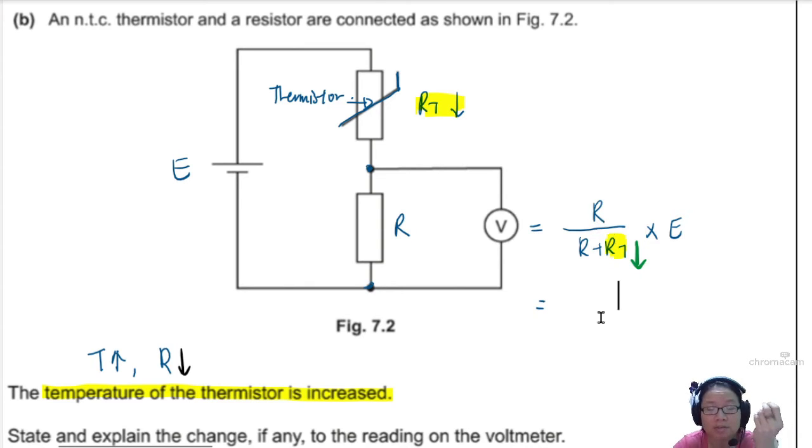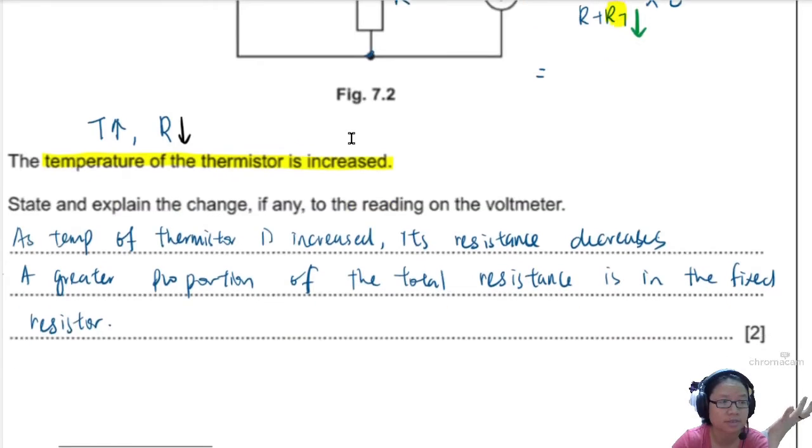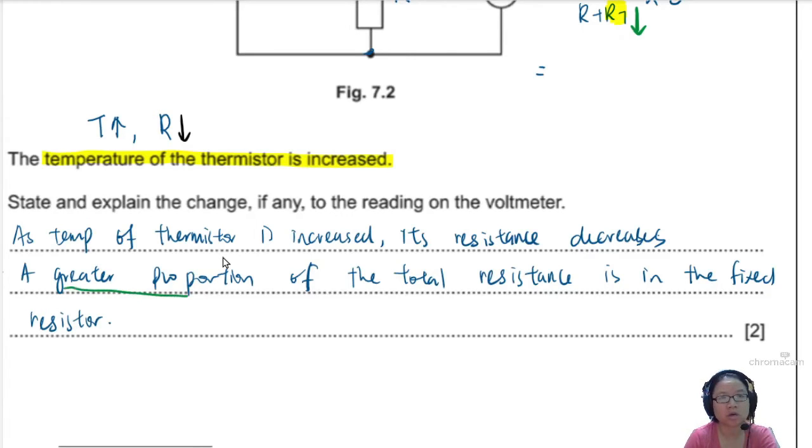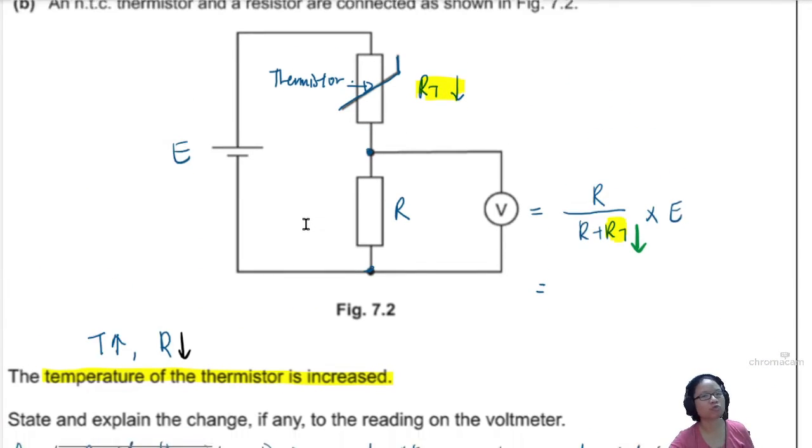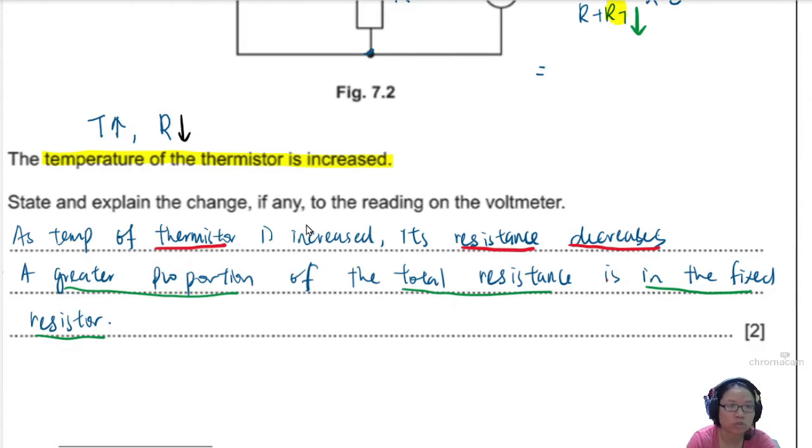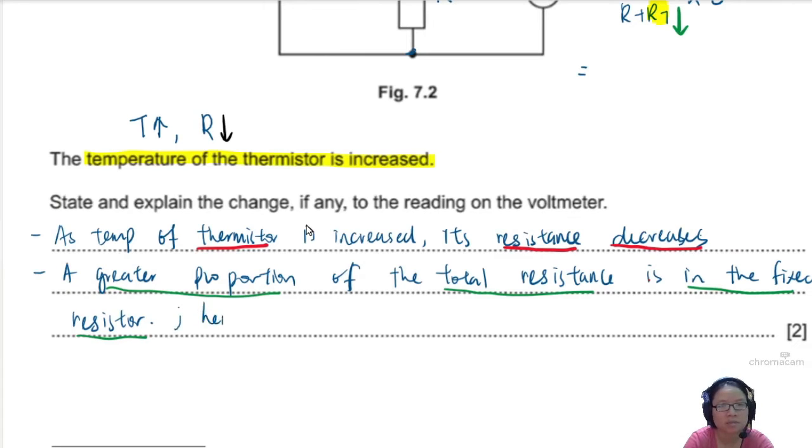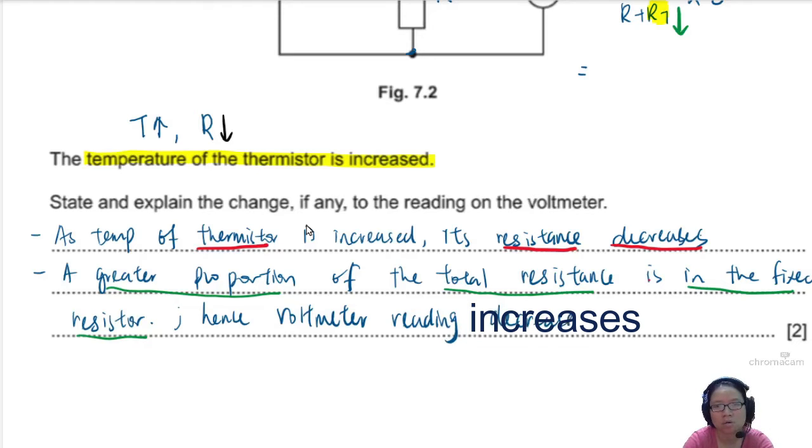And the voltmeter reading increased because this R has a larger part, a larger share of the total resistance. So this is what I mean by greater proportion of the total resistance is inside the fixed resistor. Because why? The resistance of the thermistor decreases. So RT got less. R is like, I win now. R will be like, I won because my neighbor is decreasing. My influence is stronger. So you can now make your conclusion on the vote reading of the voltmeter. You can say, hence, voltmeter reading increases. So always look at the proposition of the voltmeter and decide.